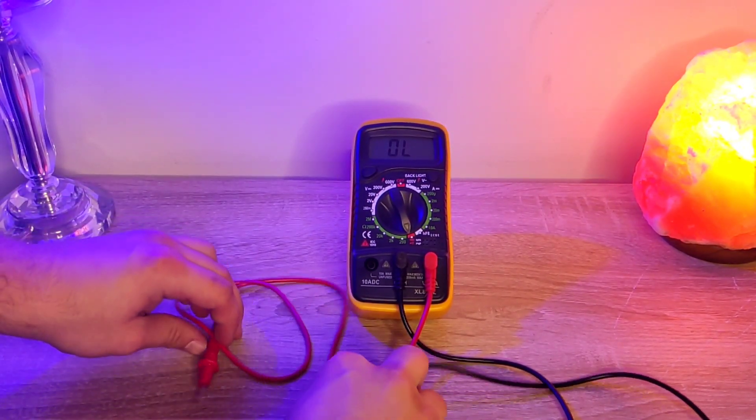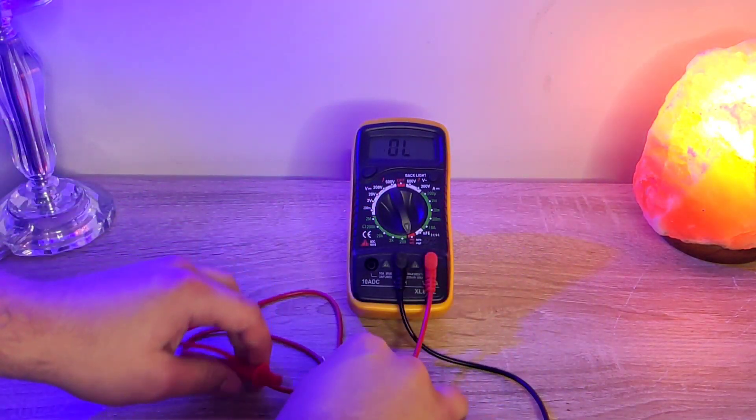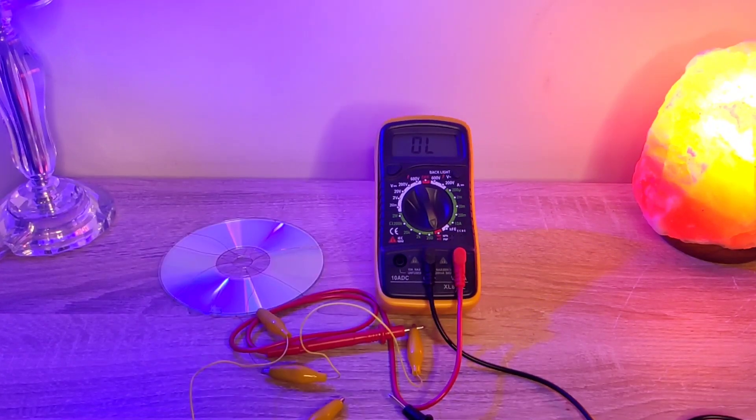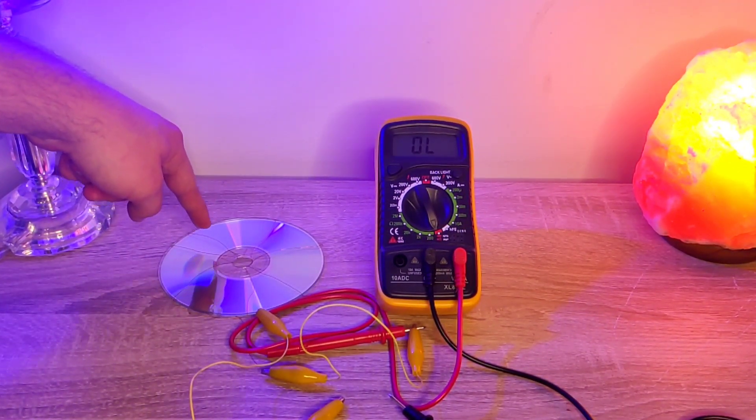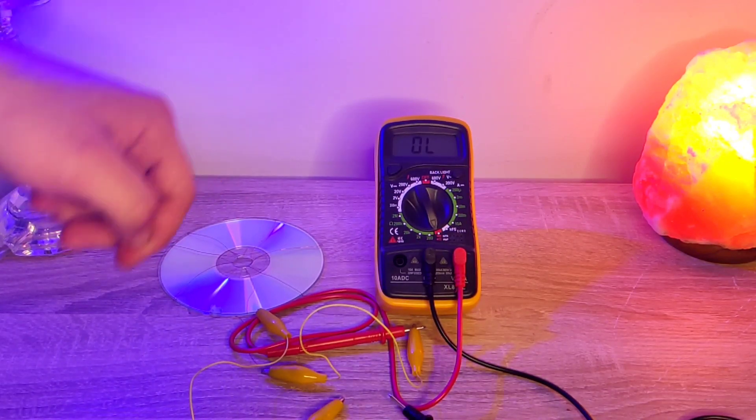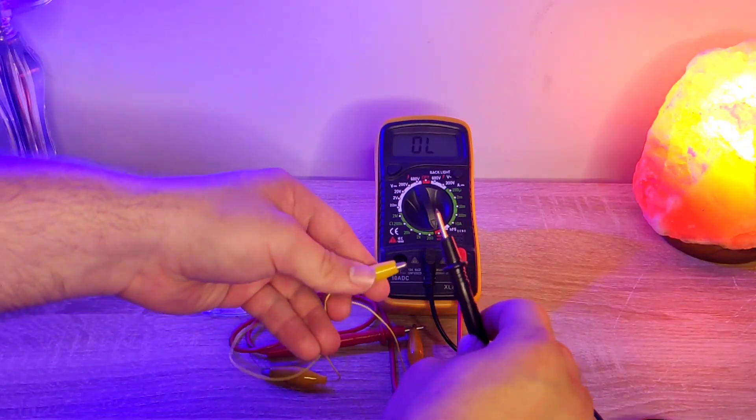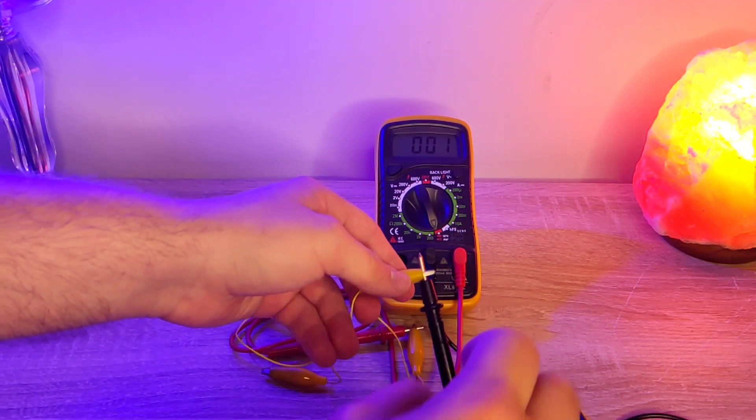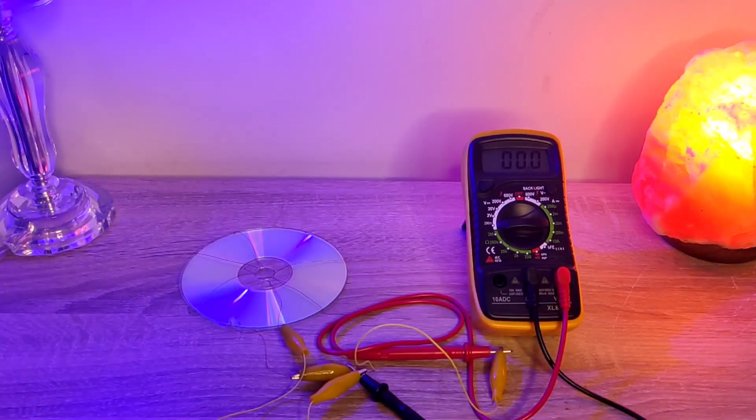The first test we're going to do is a continuity test. The multimeter works. And now I put the multimeter to the CD and we're going to test the continuity, just to show you that it is actually connected and there's no gap in the wire. Yeah? It is definitely just a wire.